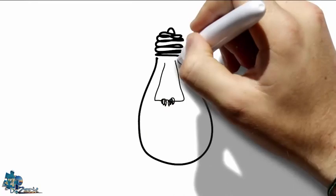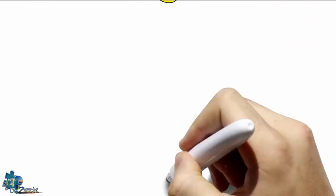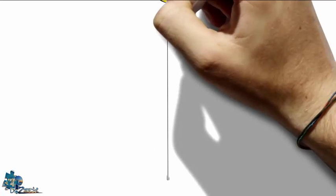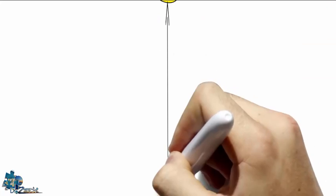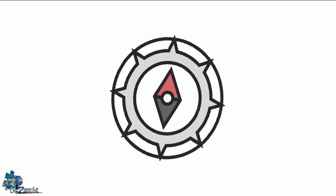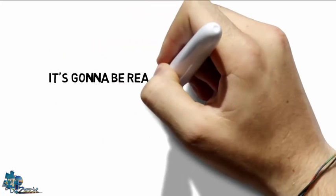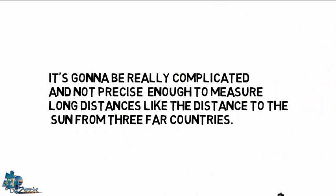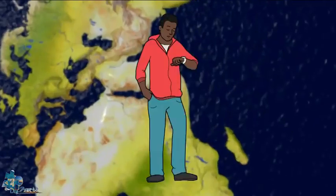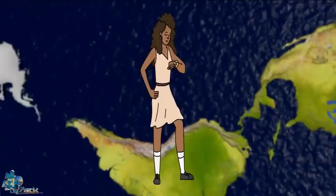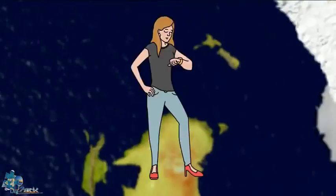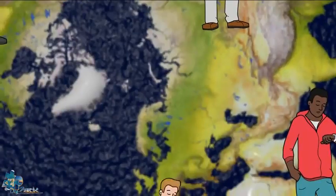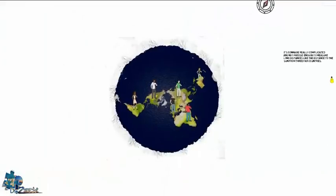What I did was measure the distance between the lamp and the ground using the elevation angles of three points and also the distances between them. I should have used a compass to know the direction of the lamp, but I didn't, because it's going to be really complicated and not precise enough to measure long distances — like the distance to the sun from three far countries. We're going to need people with a compass in every place on earth to draw an accurate flat earth map, and I'll talk about this in another video.